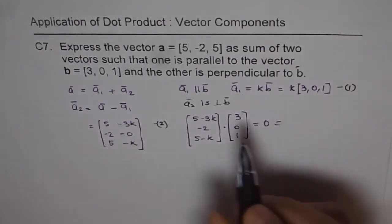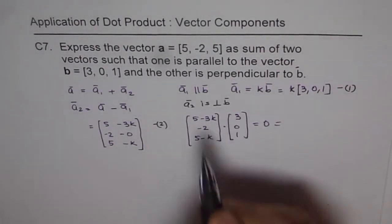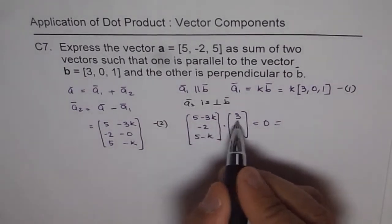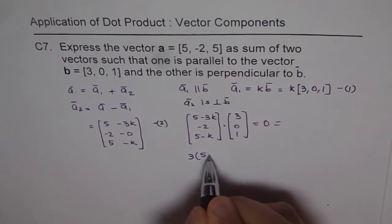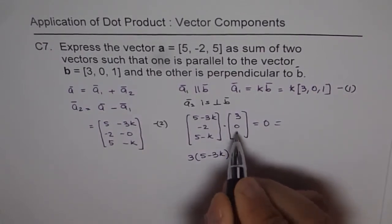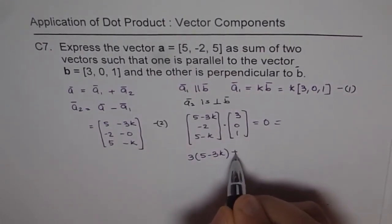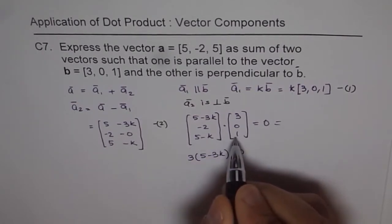So what is the dot product here? So we just multiply by 3 and get our equation. So we can write the equation: 3 times (5 - 3k) minus that is 0, let me write 0 here, and this is times 1.